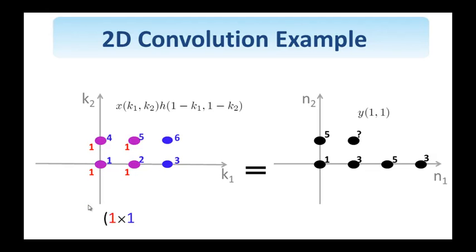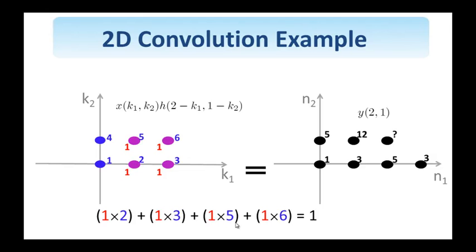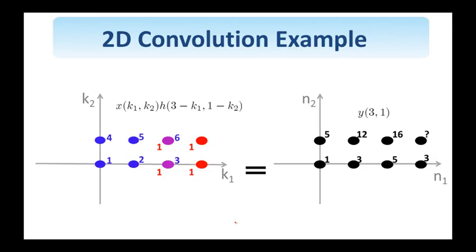Shift 1, 1. I have 4 pixels overlapping, therefore the summation involves 4 products and the value of this pixel is equal to 12. Shift 2, 1. 4 pixels overlapping, the value equals 16. Shift 3, 1. 2 pixels overlapping, the result of the summation equals 9.